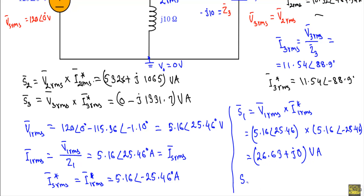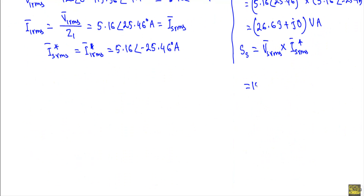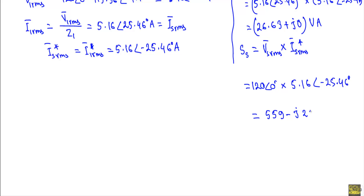The complex power delivered by the source is Ss = Vs_rms × Is*_rms, where Vs_rms = 120∠0° and Is*_rms = 5.16∠-25.46°. This gives Ss = 559 - j226.2 volt ampere.